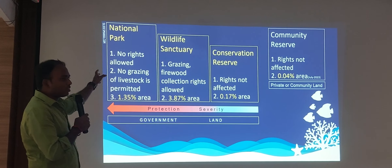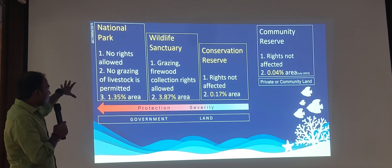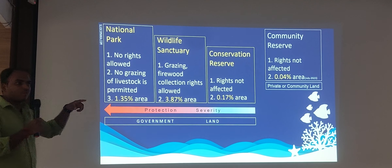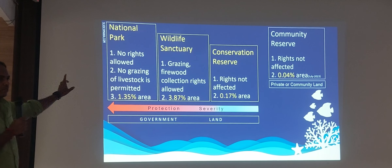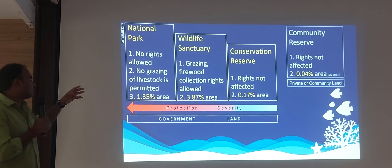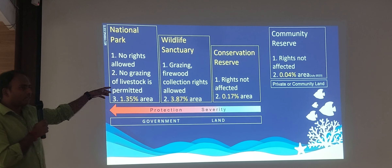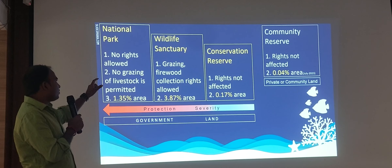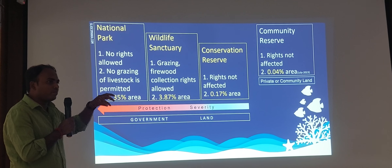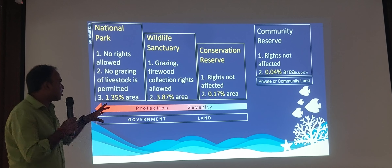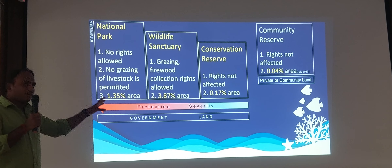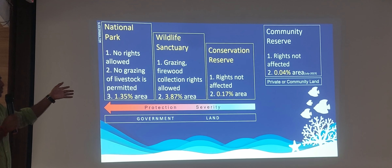National park is the highest protected category. When any area is converted to a national park, no rights are allowed — no grazing. In India, 1.35% of the total geographical area has been designated as national park. In wildlife sanctuary, a little tweaking of rights is permitted — grazing, firewood collection, and collection of some NTFP and local food is allowed. About 3.87% of India's total geographical area has been converted into wildlife sanctuary.